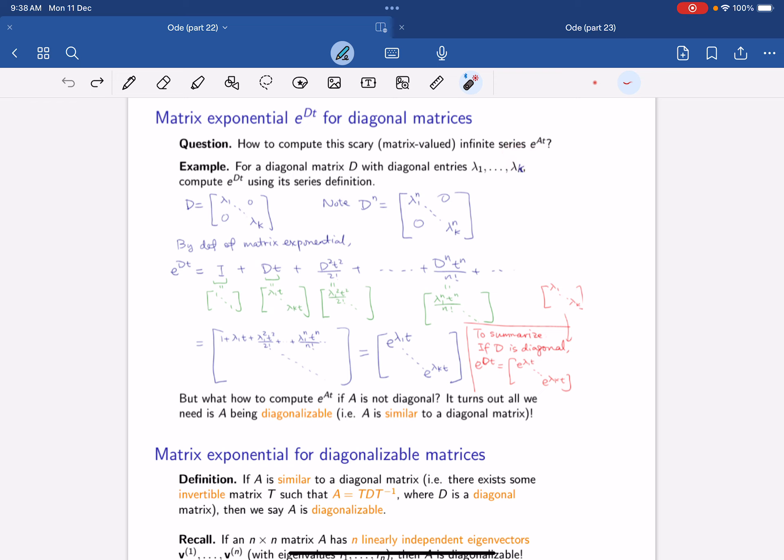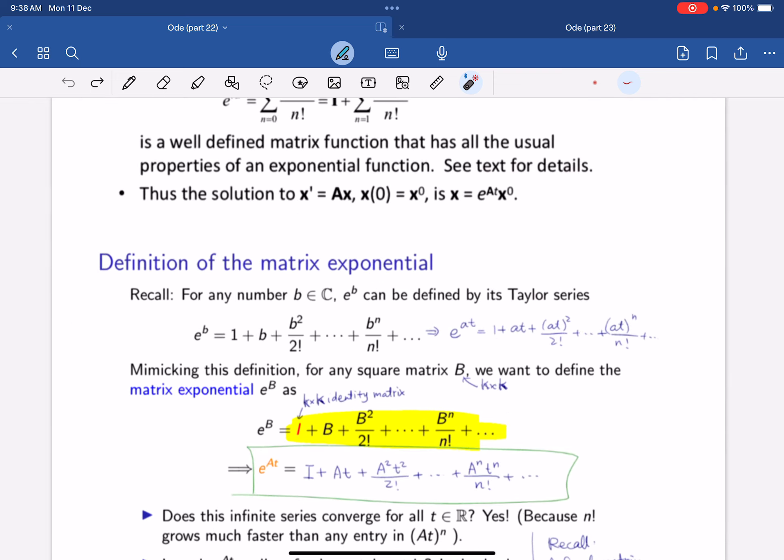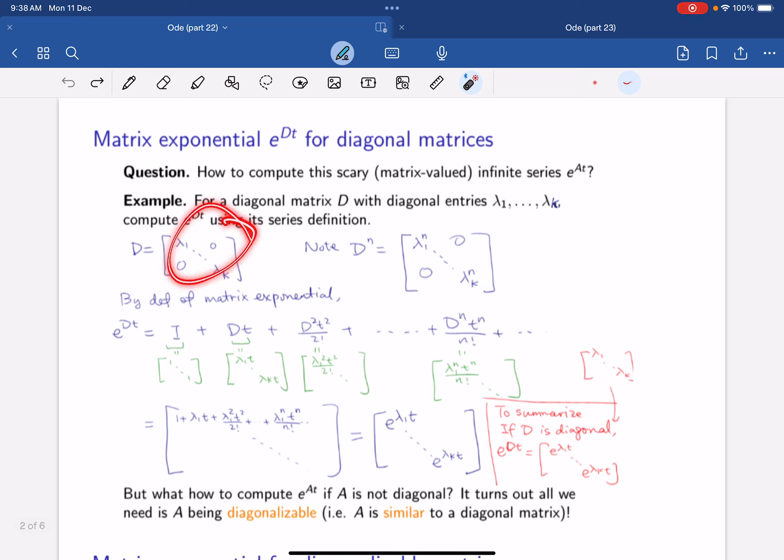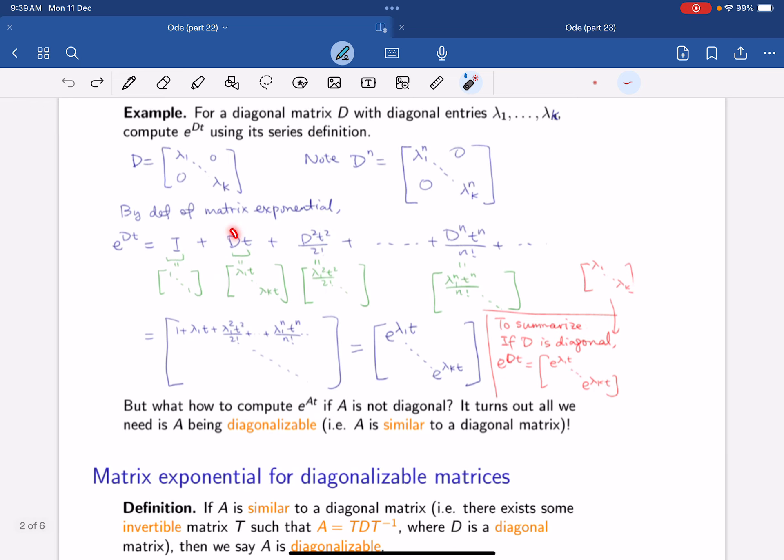So next, we define the matrix exponential for diagonal matrices, which is easy to compute. For example, you have, what's e to the power of at? Well, you got this infinite sum, and you're not sure how you want to add all of them together. But if you have just a diagonal matrix, then d to the power of m will also be this. So e^dt will just be i plus dt plus d squared t squared over 2 factorial, and so on.